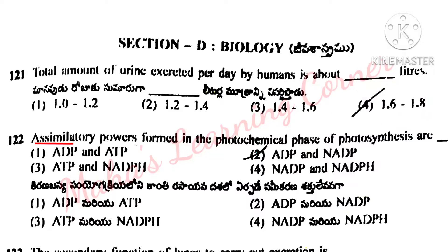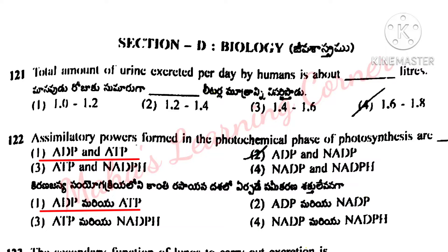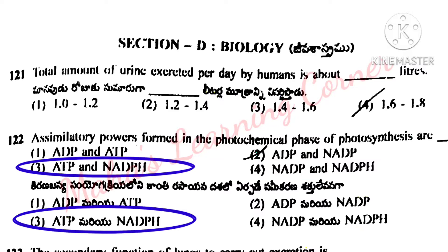Next question: assimilatory powers formed in the photochemical phase of photosynthesis are? Options: ADP and ATP, ADP and NADP, ATP and NADPH, NADP and NADPH. Correct answer is option 3: ATP and NADPH.